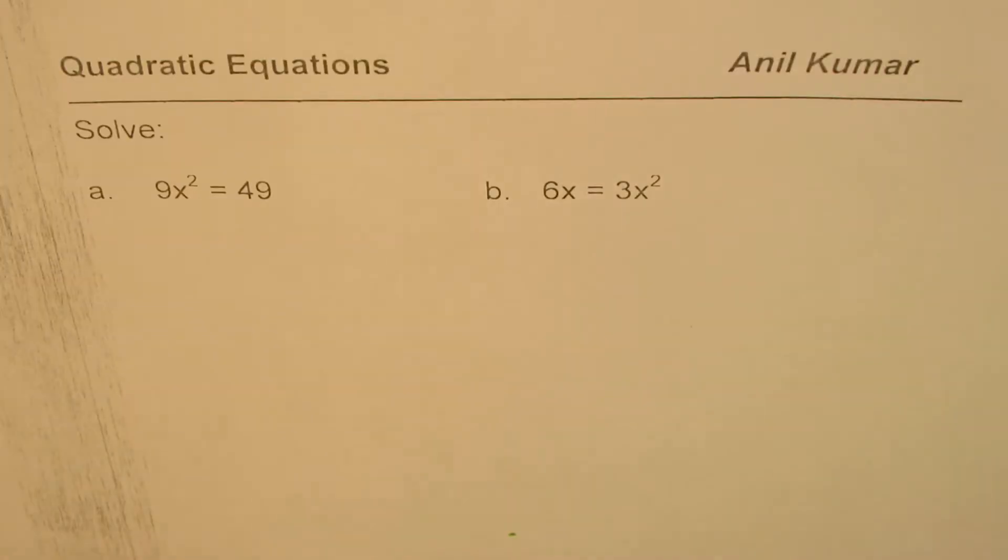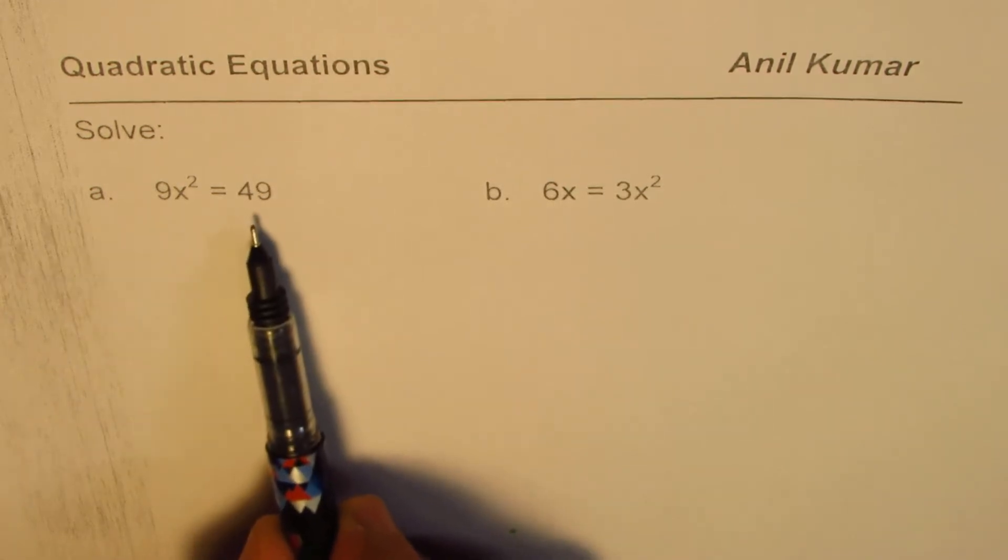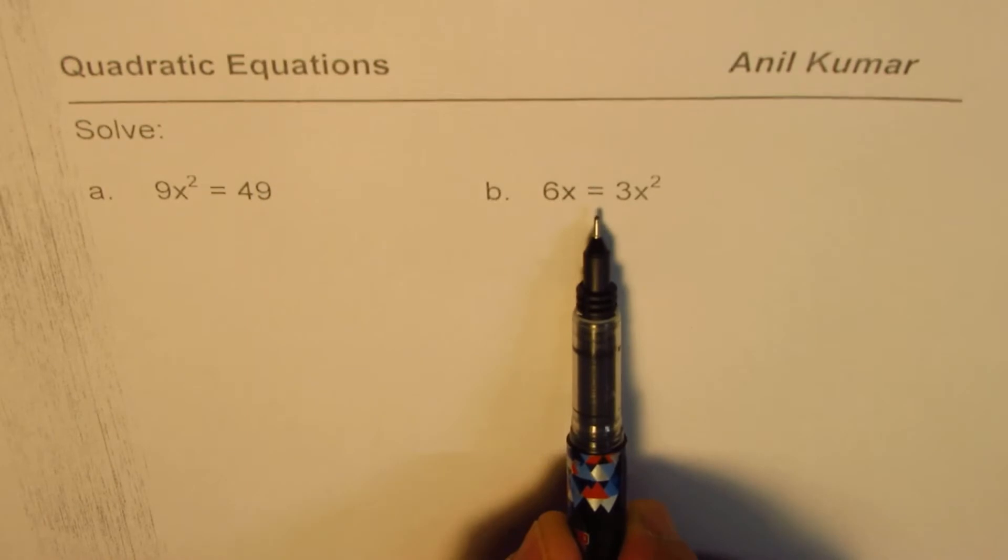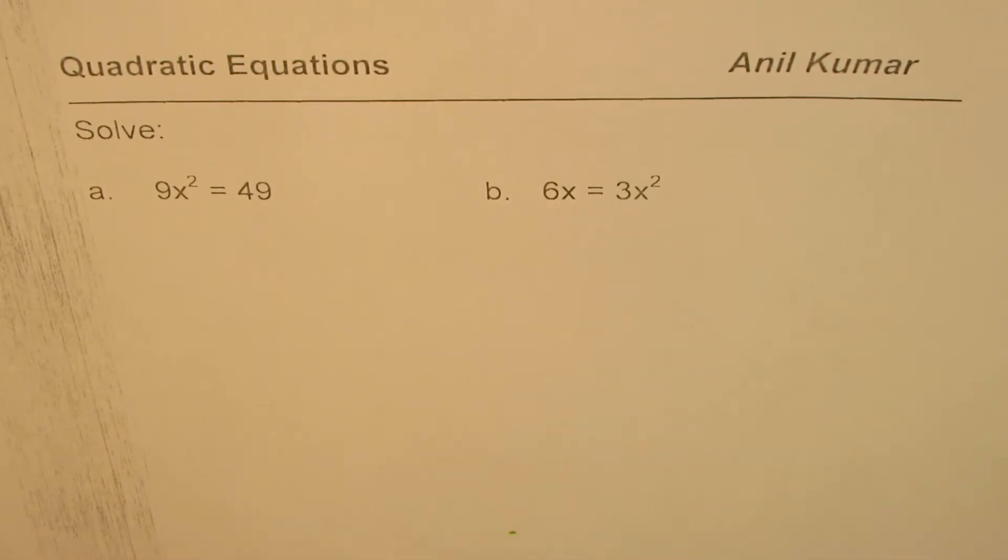So one of these questions here is solve 9x squared equals to 49, that's part A. 6x equals to 3x squared. So that's the question for you.